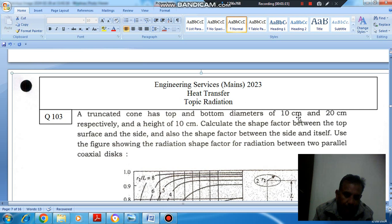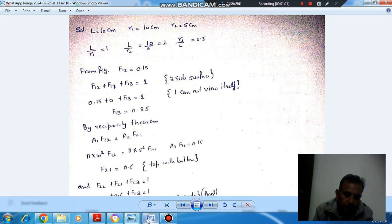So R1 is 5, R2 is 10, and H is 10. So these are the data.